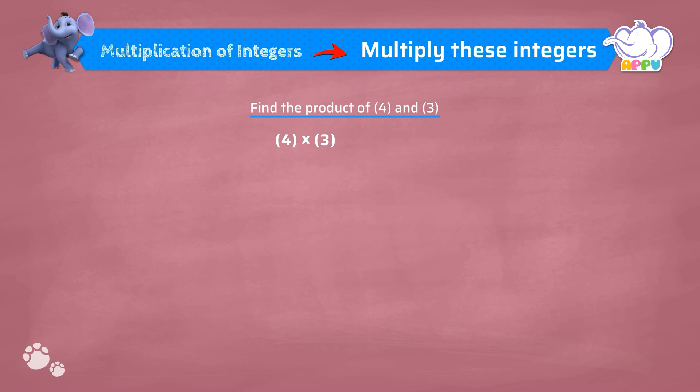To find the product of 4 and 3, we first find the product of 4 and 3, which equals 12. We have to place the sign for this product. Here, 4 and 3 are both positive integers.